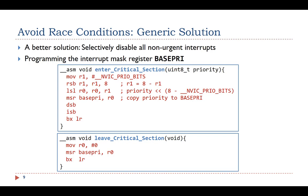A better generic solution is to program the interrupt mask register to disable non-urgent interrupts instead of all interrupts. The enter critical section function takes a non-zero argument called priority. It programs the BASEPRI register to disable all interrupts which have a priority value larger than the input argument.